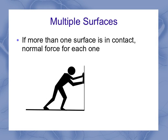Now, if I've got multiple surfaces, like I have in this example, I have to consider a normal force for each one of the points of contact. So for example, up here at my hands, I have a normal force where I'm pushing on the wall, and the wall is pushing back on my hands.